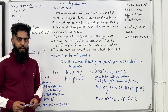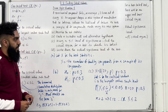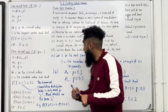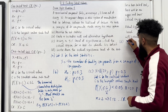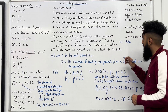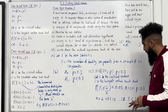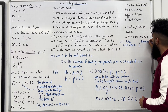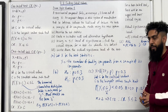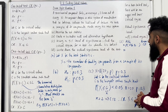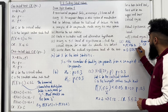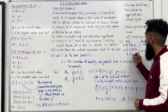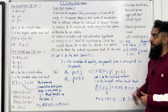Part D: write down the actual significance level of the test. The actual significance level (ASL) equals the probability of the critical region, which is P(X ≤ 2). Using the binomial CD function on the calculator, I get 0.0355. Multiplying by 100, the actual significance level is 3.55%. This completes Part D and exam style question 1.